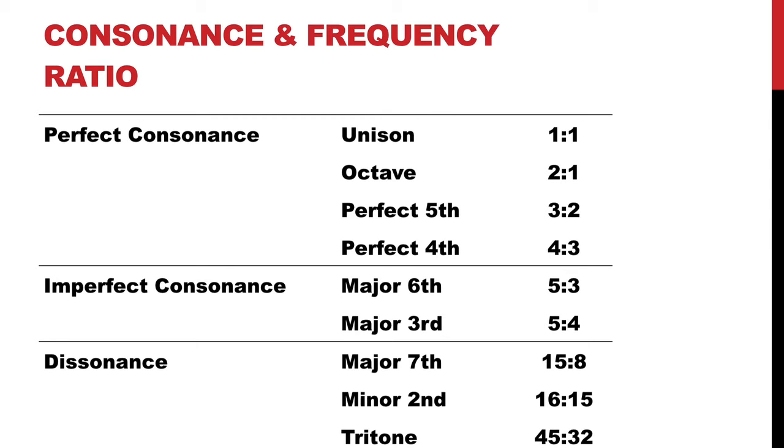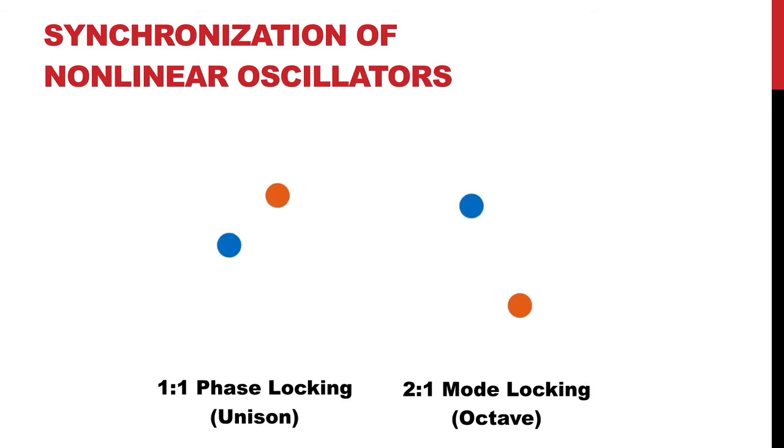We explained the relationship between consonance and frequency ratio in terms of synchronization of nonlinear oscillators. Nonlinear oscillators synchronize to other oscillators by either phase locking in a 1 to 1 ratio, as shown on the left, or by mode locking in an integer ratio, such as the 2 to 1 ratio, shown on the right. An important property of mode lock synchronization is that mode locking is stronger and more stable for simpler mode locking ratios.